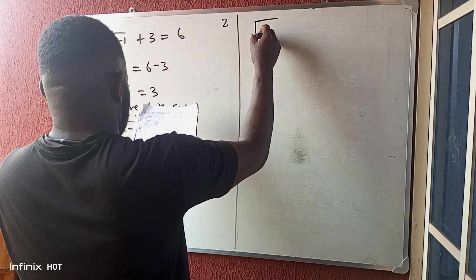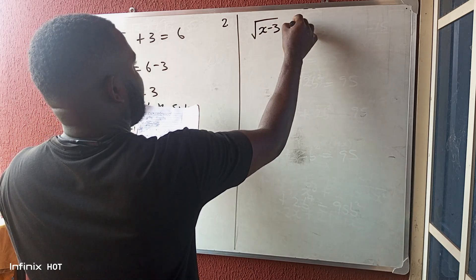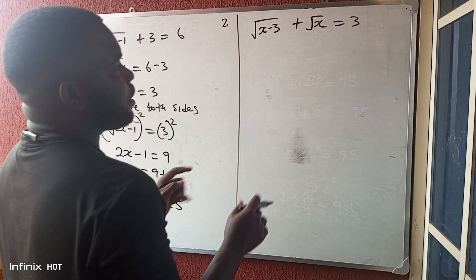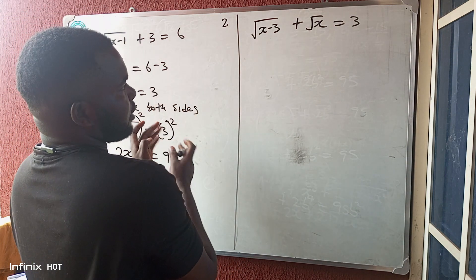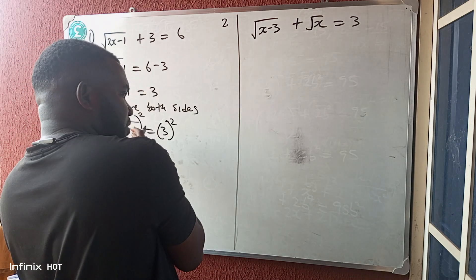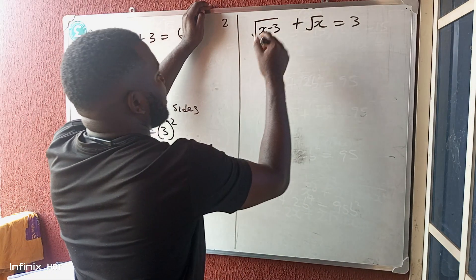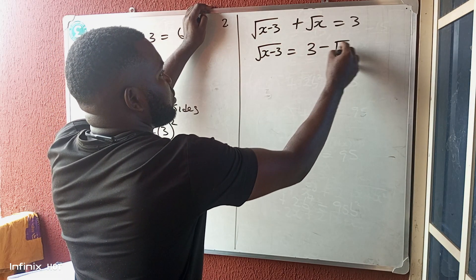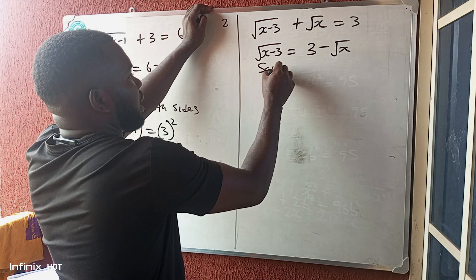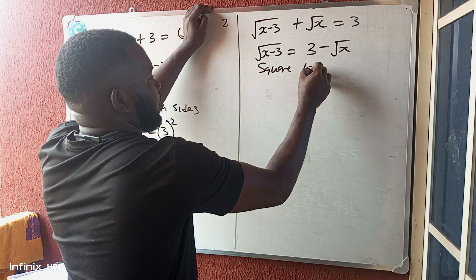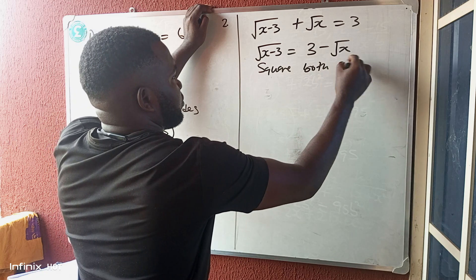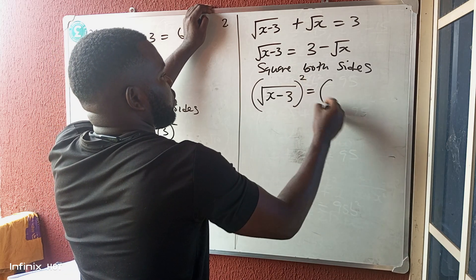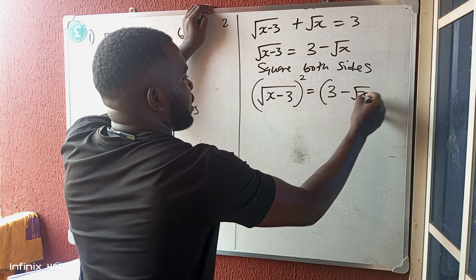Number two: root(x - 3) + √x = 3. In this form, we can't have two square roots on the same side when we square both sides, so we move one to the other side. We get root(x - 3) = 3 - √x. Now we square both sides: root(x - 3) all squared equals (3 - √x) all squared.